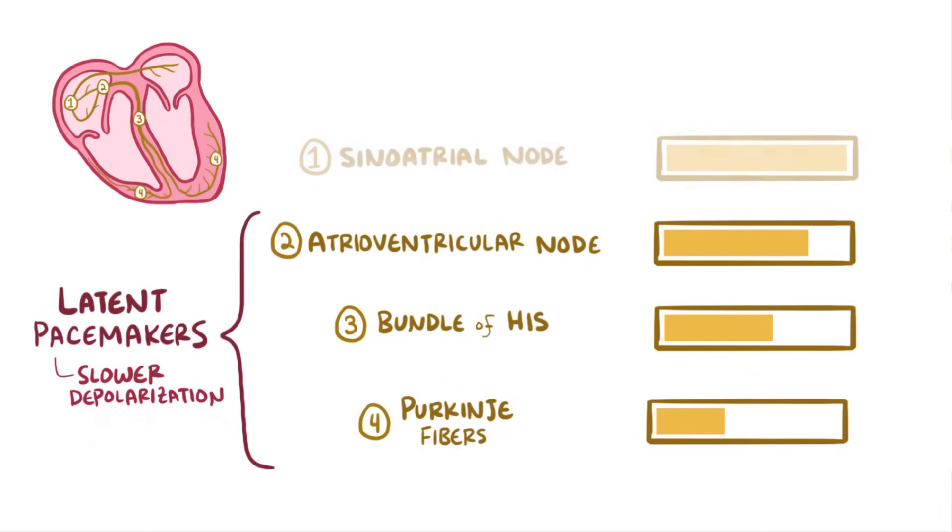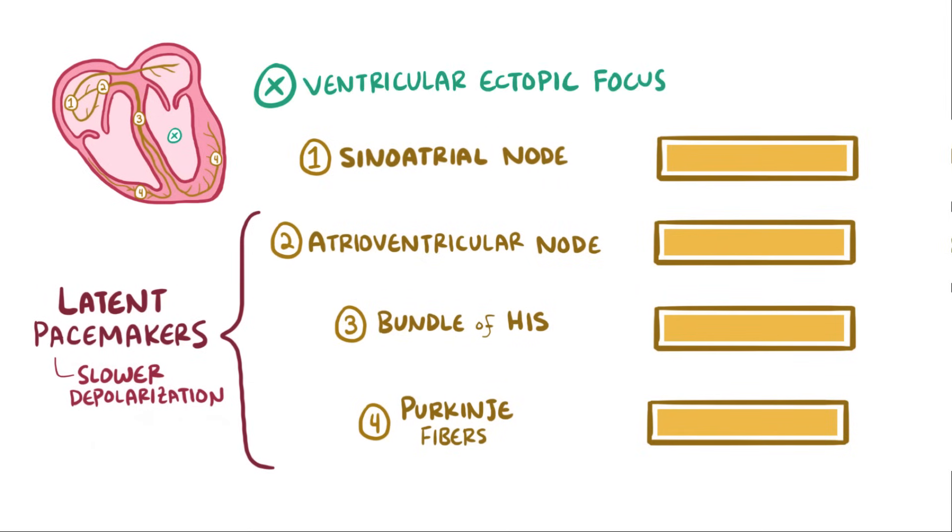If, for example, the SA node stopped altogether, then the AV node would take over at its slightly slower pace. Now though, let's say you have a ventricular ectopic focus somewhere in the ventricles, which is a cell or area of tissue that sends off an early depolarization wave, before even the SA node gets to fire. This is what leads to a premature ventricular contraction, or PVC.